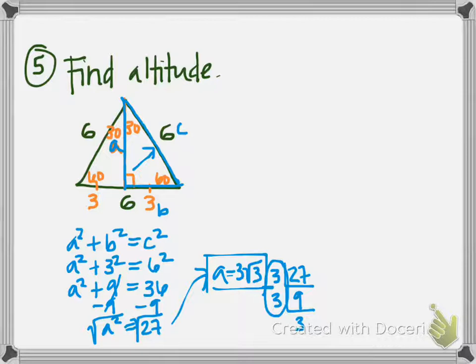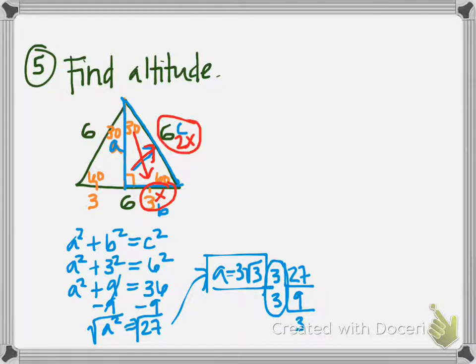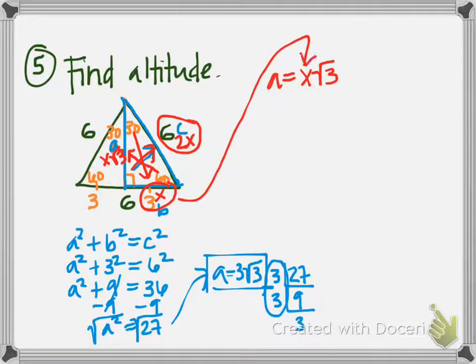We can also use the 30-60-90 ratios. The side across from 30° is x, across from 90° is 2x, and across from 60° is x√3. Since 6 is across from 90°, 6 = 2x, so x = 3. The altitude is across from 60°, so it equals x√3 = 3√3. Much simpler than Pythagorean theorem!